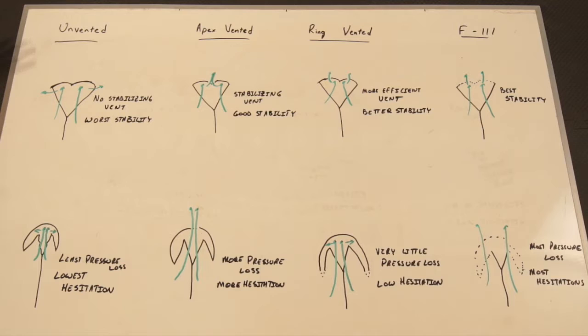Let's review the types of venting on pilot chutes that we've talked about in previous videos and what the differences are between them all at once. The four main types of pilot chutes and their venting are unvented, apex vented, ring vented, and F-111 pilot chutes.